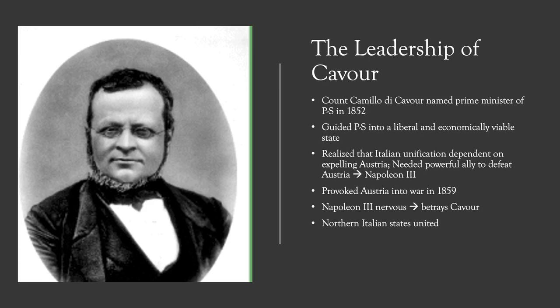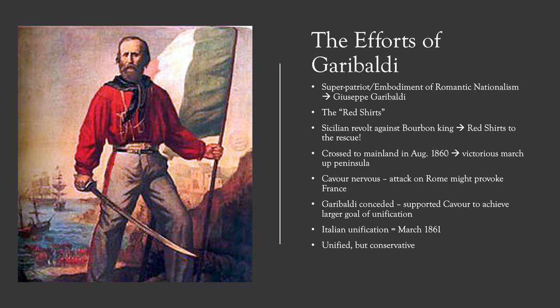By 1860, most of northern Italy was now unified except for Venezia, the Papal States, and southern Italy. So the question was, how does Cavour get the southern states to unify and join the northern states? This is where Giuseppe Garibaldi comes in.